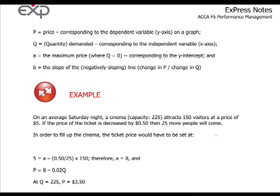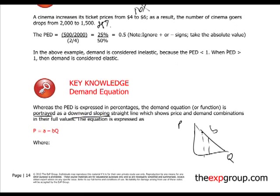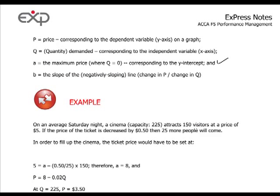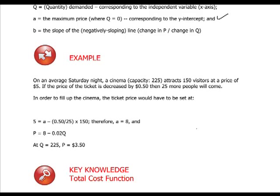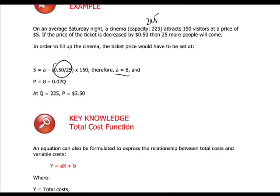The demand equation is represented as a downward-sloping straight line. If price is on the vertical axis and quantity on the horizontal axis, as price goes up, quantity goes down. The slope of this line is B. Point A is the maximum price — where quantity is zero and nobody buys the product. In a cinema example: on an average Saturday night, with 225 seats, 150 visitors attend at $5. If the ticket price decreases by $0.50, 25 more people come. This determines B, and then A can be found to calculate the price needed to fill the cinema to 225.